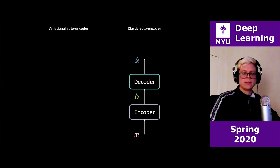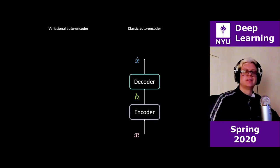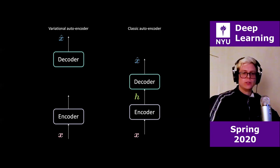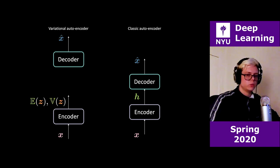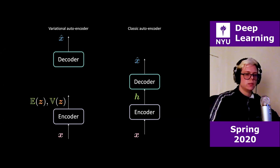On the right-hand side you have an autoencoder; on the left-hand side, a variational autoencoder. A variational autoencoder looks similar — so what's the difference? The first difference is that instead of a hidden layer h, the code is made of two things: E(z) and V(z), representing the mean and variance of the latent variable z.